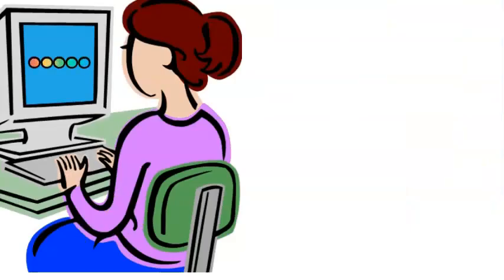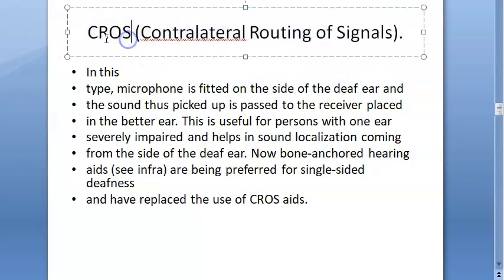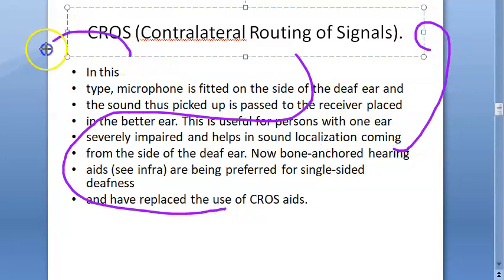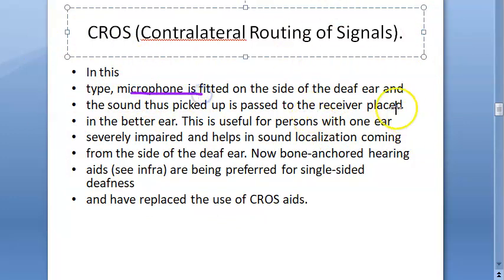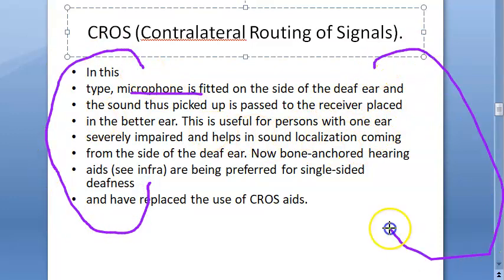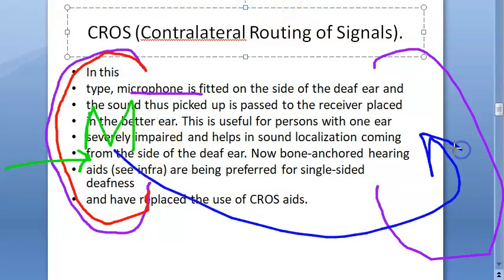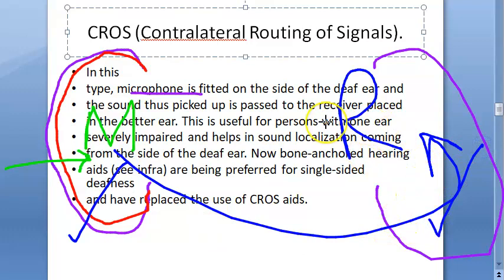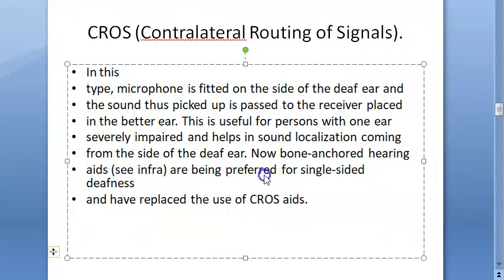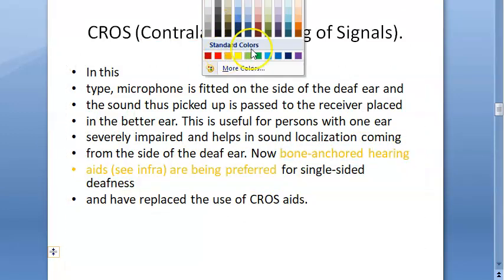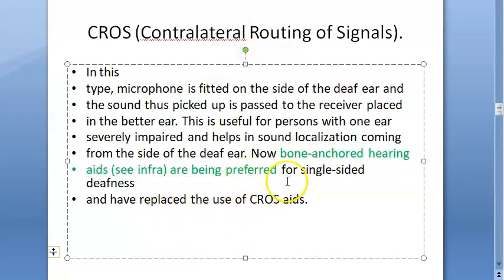One important terminology for conventional hearing aids: CROS — contralateral routing of signals. The signal from one side is routed to the other side. The microphone is fitted on the deaf ear to pick up sound, and the receiver is on the better ear, so the person can hear from both sides. However, bone-anchored hearing aids are preferred for this kind of unilateral (single-sided) deafness.